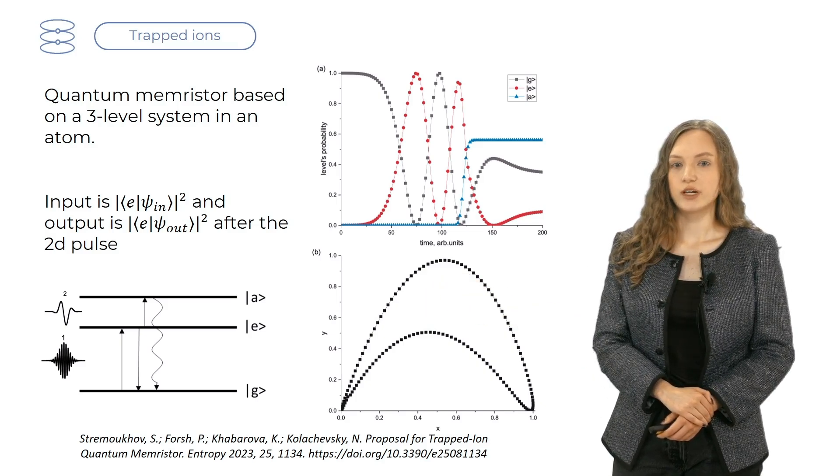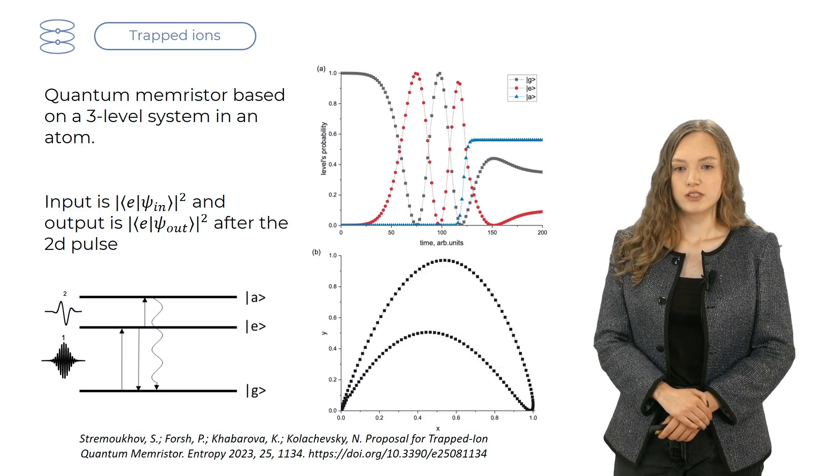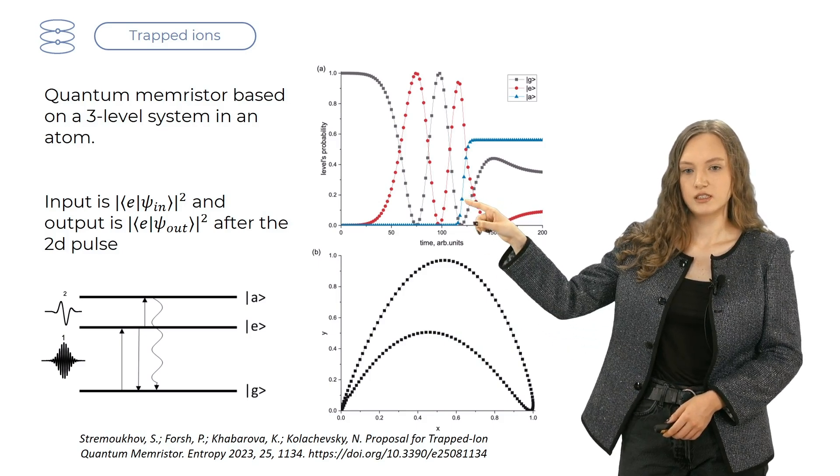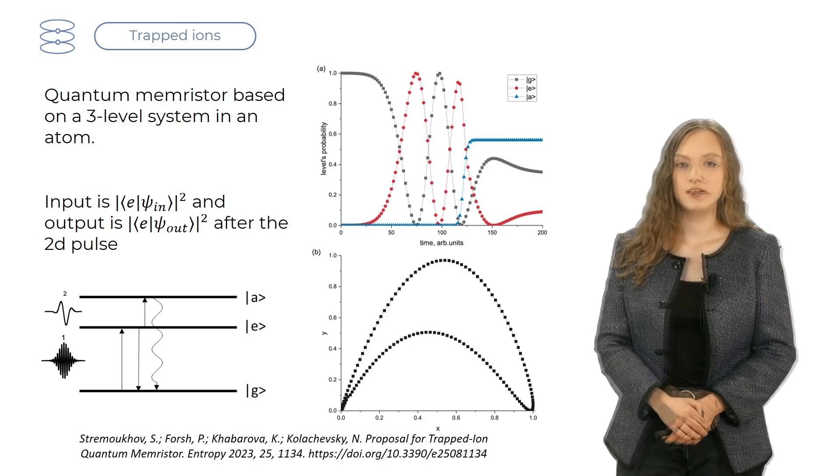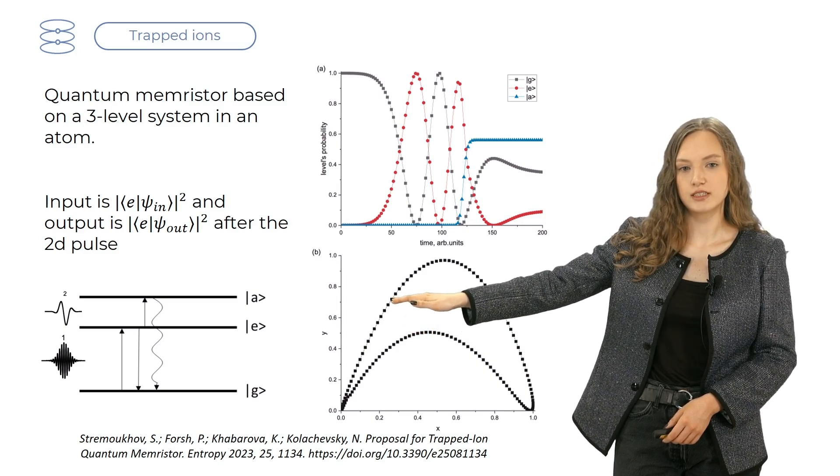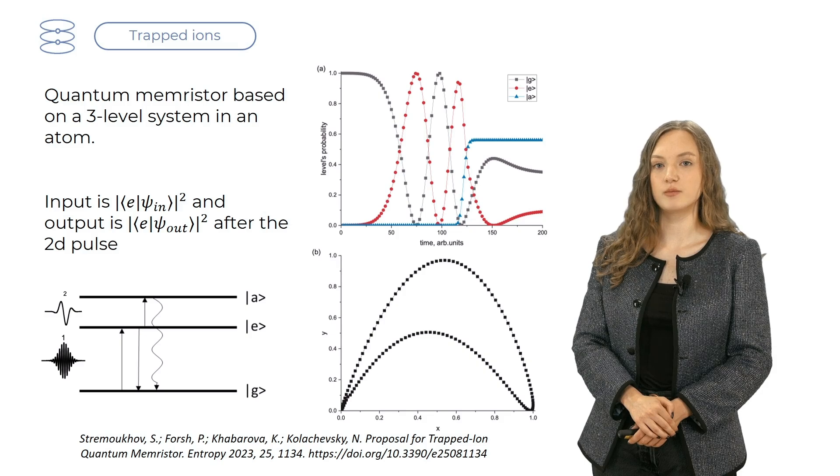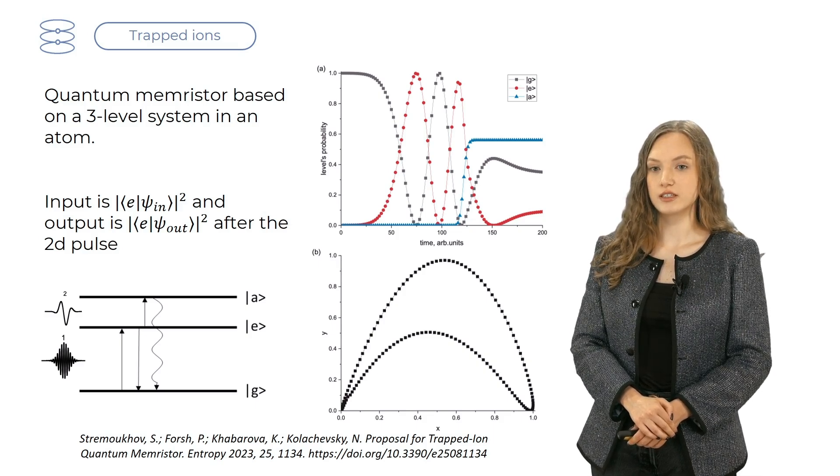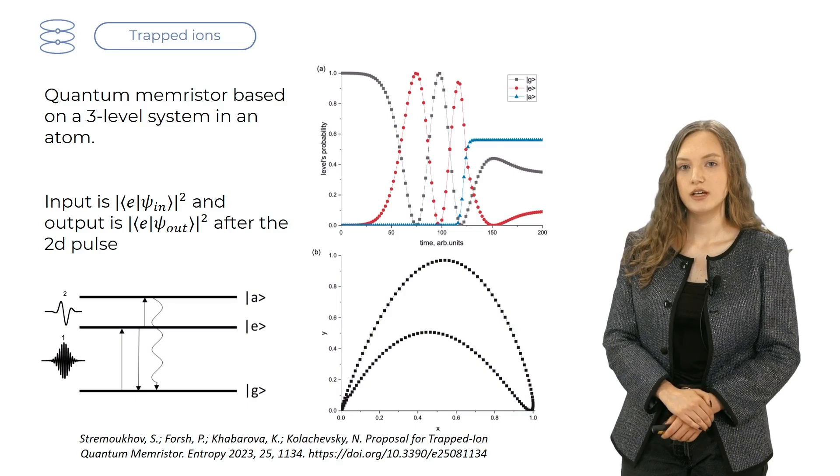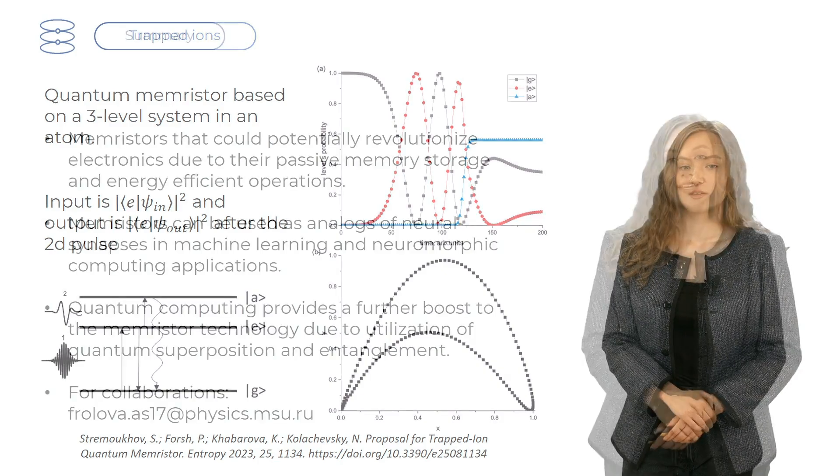When laser pulses at a certain frequency ω₁ are shown, the population of electrons begins to oscillate between levels G and E, ground and excited states, as you can see in this plot with red and gray curves. Then, another laser pulse at frequency ω₂ is used to bump some electrons from the excited level up to the activation level. A feedback procedure here is used as well. The population of the activation level is measured to adjust the parameters of the second laser. A hysteresis curve is obtained for this system when the average electron population of the excited level, after the second pulse, is plotted against the same population before the second pulse.